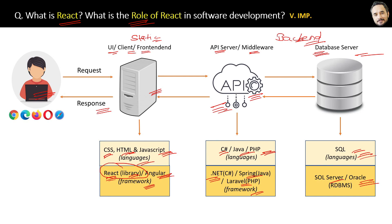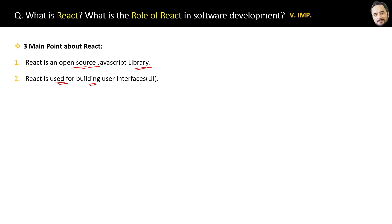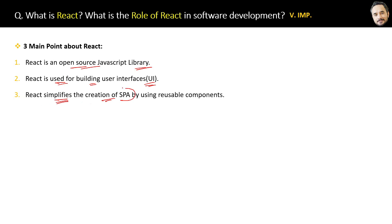Great. Now you know React is used to simplify the creation of complex UI applications. Finally, three points to remember about React: React is an open source JavaScript library. React is used for building user interfaces. And why do we need React — although we already have HTML, CSS, and JavaScript — React simplifies the creation of single page applications by using reusable components. In upcoming questions we will explore more about especially this third point.